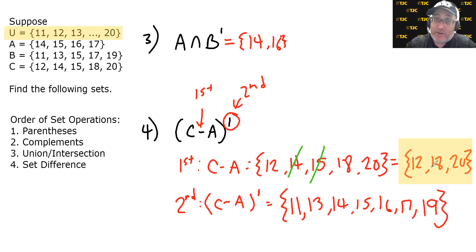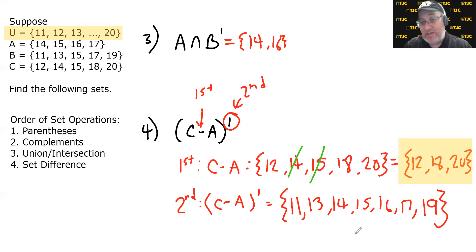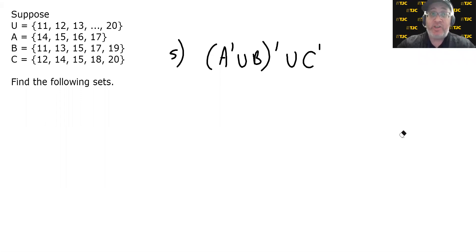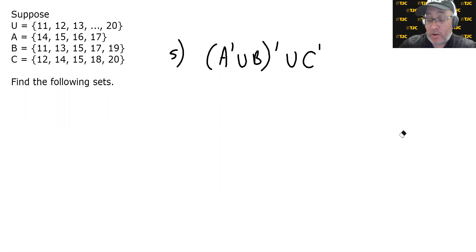This is just like most arithmetic problems — find the correct order, do one step at a time, and make sure you understand what each step is. Now for example 5, same sets as before, same universe, same A, B, and C, and same order of set operations.